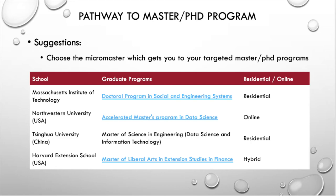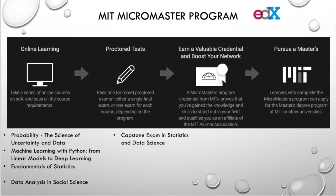The Data Science and Statistics MicroMasters program has 4 courses plus 1 capstone course. From my experience, the workload of one MIT course is more than a similar specialization in Coursera. You could check out my video on the comparison of Andrew NG Deep Learning Specialization versus the MIT Machine Learning course.